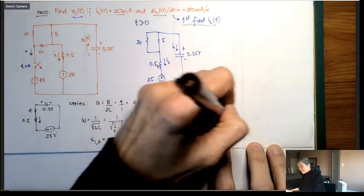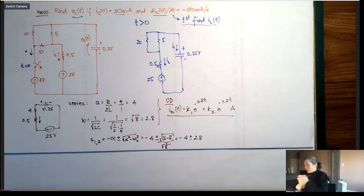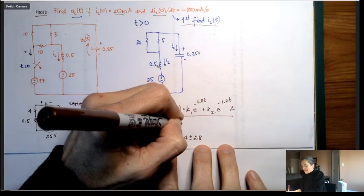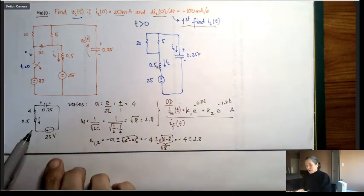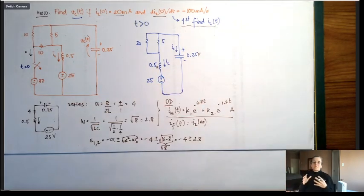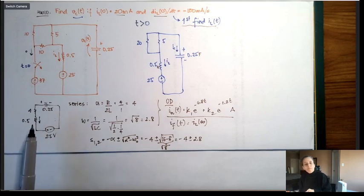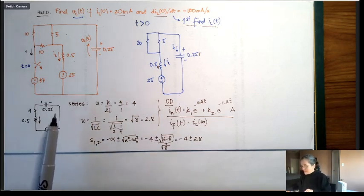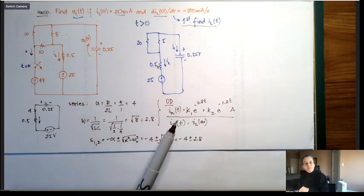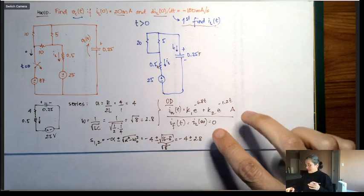This is by far the most common mistake people make: going directly to the final solution without finding the forced solution. The natural solution is IL_n = k1·e^(−6.8t) + k2·e^(−1.2t) amps. I still need the forced solution — what happens as t approaches infinity. In steady state the capacitor is open and the inductor is shorted, so the inductor current IL(∞) = 0. Since the forced solution is zero, the total solution equals the natural solution.